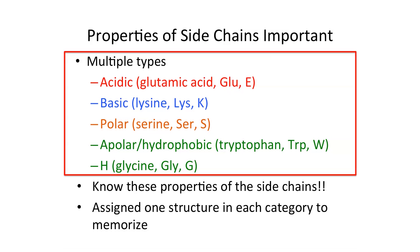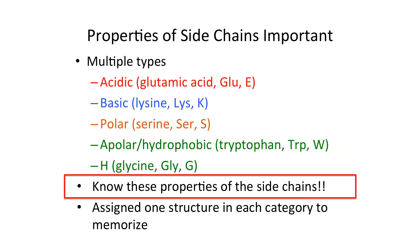The properties of the side chains are important because they determine protein structure. Side chains come in multiple classes: acidic, basic, polar, apolar or hydrophobic, and then glycine, which is the lone amino acid that just has a hydrogen and doesn't really have a side chain. You need to know the properties of these side chains because they are so important in determining protein structure and protein function.